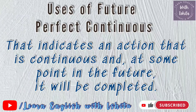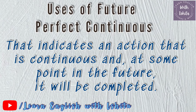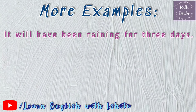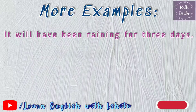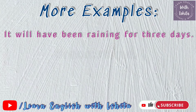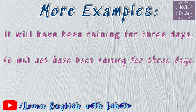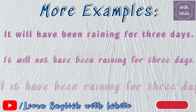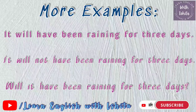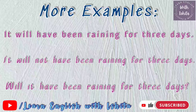From this lesson you have learned when to use the future perfect continuous tense, how to use it, and how to construct sentences with it. Let's do a quick recap with more examples. Positive: 'It will have been raining for three days.' Negative: 'It will not have been raining for three days.' Interrogative: 'Will it have been raining for three days?'